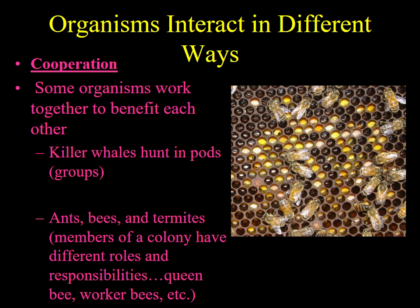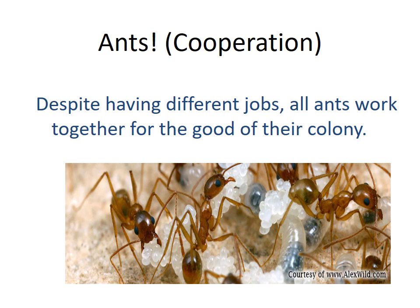Cooperation is when organisms work together so that both can benefit. For example, killer whales hunt in pods — groups — because it's much easier to surround and attack prey together. Ants, bees, and termites of the same colony have different roles and responsibilities, cooperating with each other to get a job done. Despite having different jobs, all the ants work together for the good of the colony.